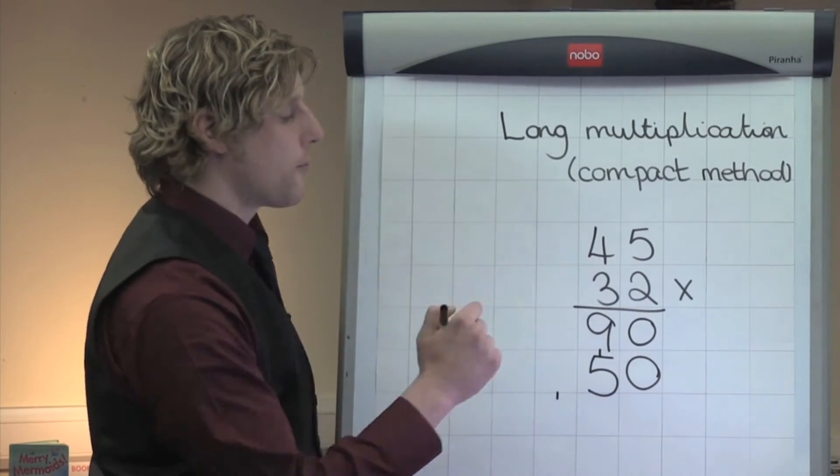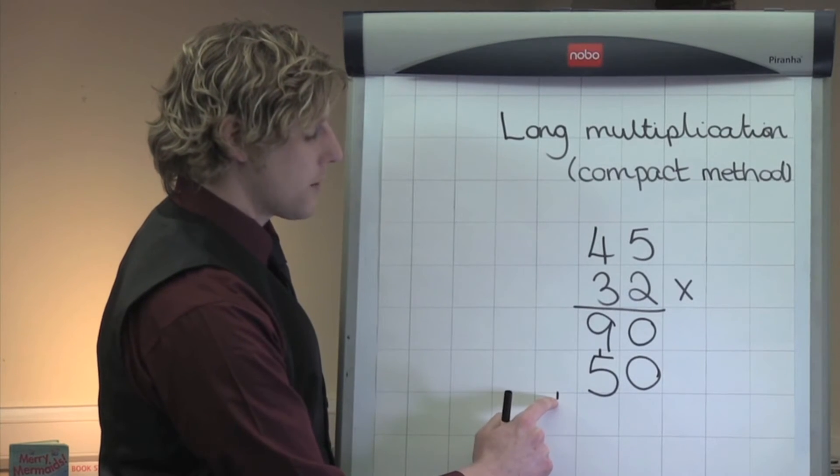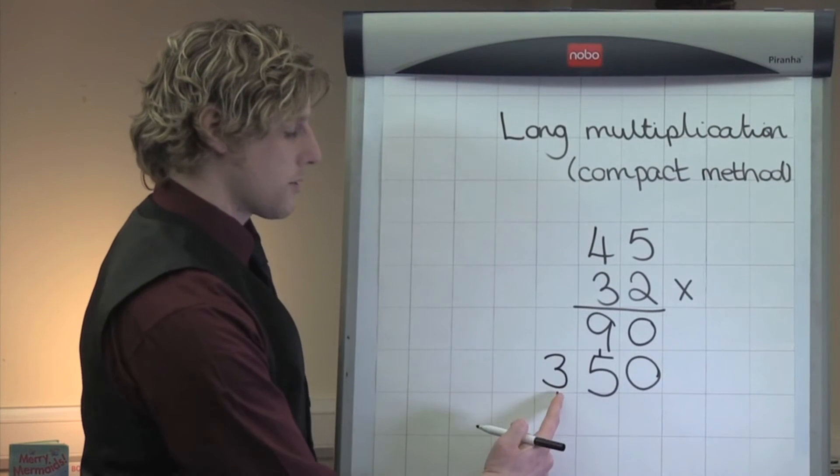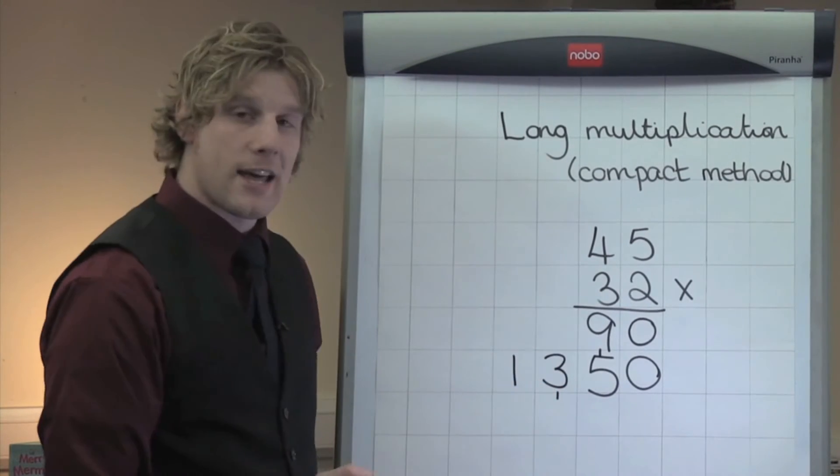3 times 4 is 12. Add onto the 1 that I've carried across to make 13. I write my 3 into the hundreds column and my 1 into the thousands column.